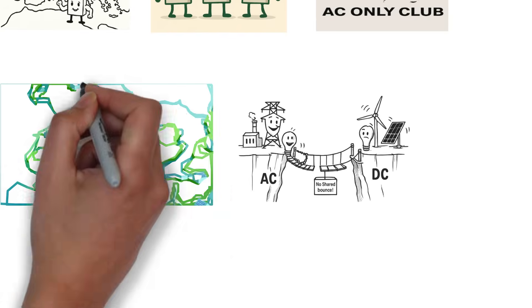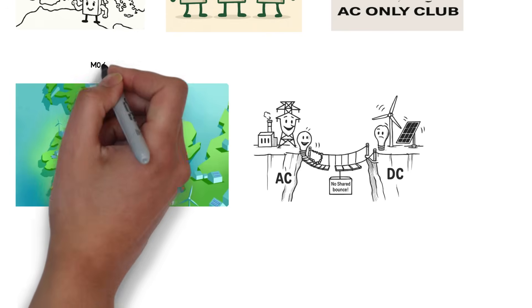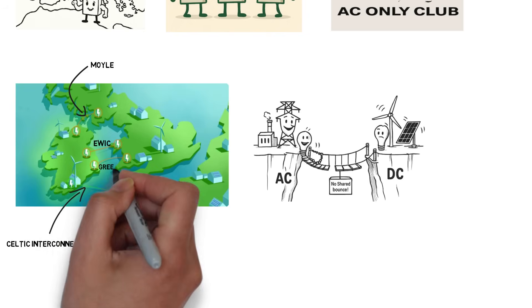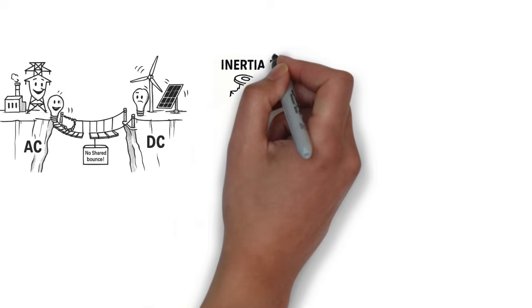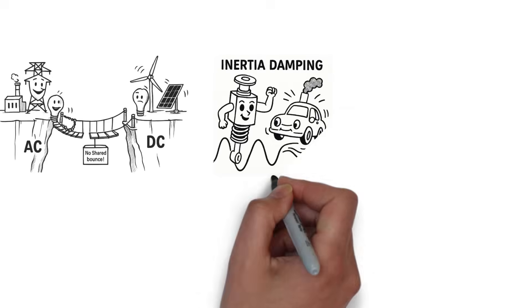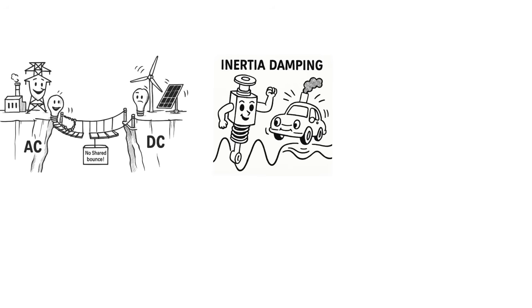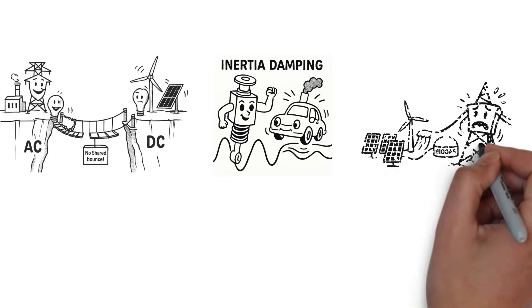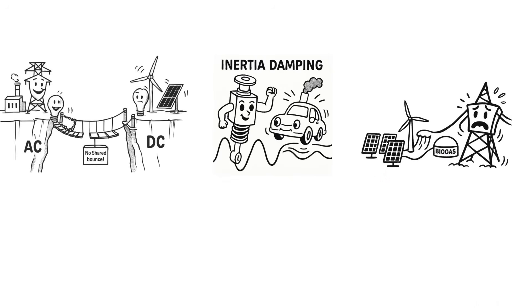Ireland currently has three interconnectors: Moyle, East-West, and Greenlink. A fourth is on the horizon, scheduled for completion in 2026. But here's the reality. None of these will help with inertia. Remember, inertia is like a car's shock absorber. It doesn't stop the motion, but it slows the rate of change, giving the system time to react. Without it, the grid becomes twitchy, unstable, and dangerously fast-moving.